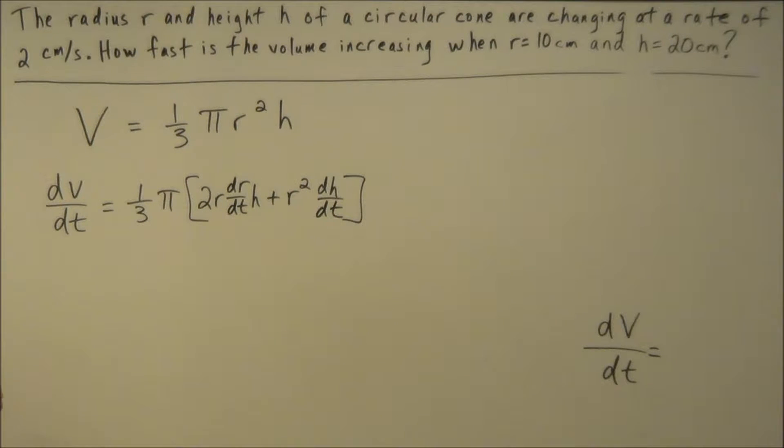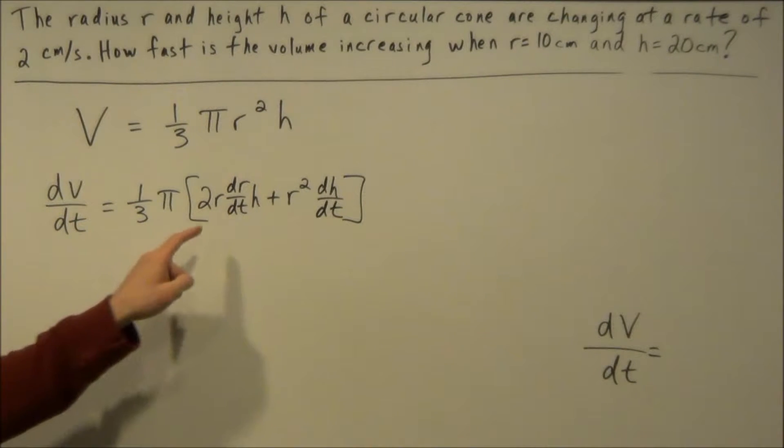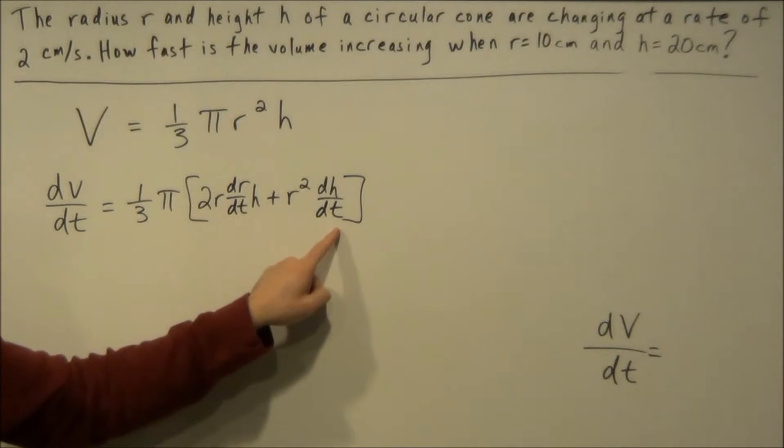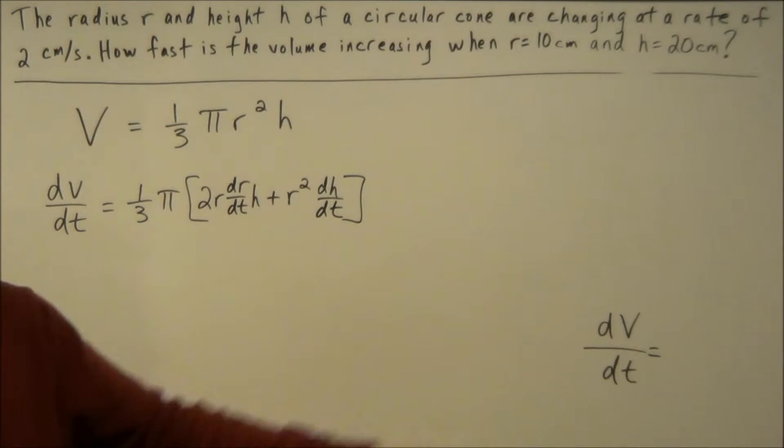But once you get to this stage of the problem notice we're looking for dV/dt but we have 1, 2, 3, 4 unknown terms that we have to find. So we need to collect 4 pieces of data to calculate dV/dt for this problem.